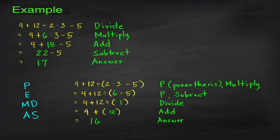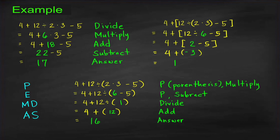Now suppose we have two grouping symbols — square brackets and parentheses. From PEMDAS, we work from the inner grouping symbol outward. We perform the multiplication inside the parentheses first: 2 times 3 equals 6. Then within the square brackets, division comes before subtraction: 12 divided by 6 is 2, followed by 2 minus 5, which equals negative 3. Finally, 4 plus negative 3 gives the answer of 1.